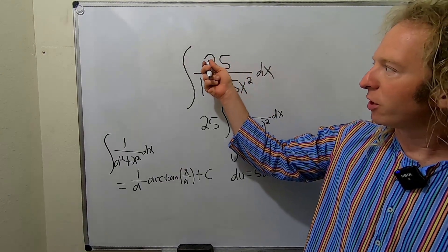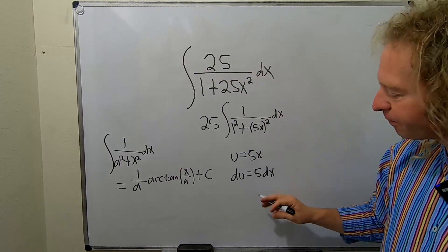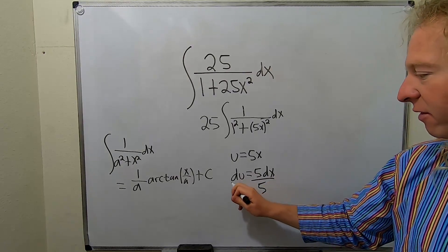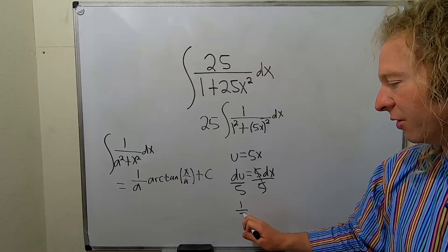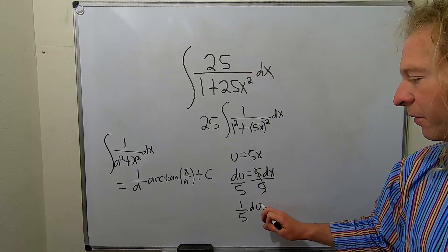Now, you might be wondering, what if you leave the 25 in? It would have been a similar procedure. So let's divide by 5. Divide by 5. Would have been slightly different, but we would have gotten the same answer. So 1/5 du equals dx. The reason I wrote it as 1/5 is because we know in the next step, we're going to pull that constant out.